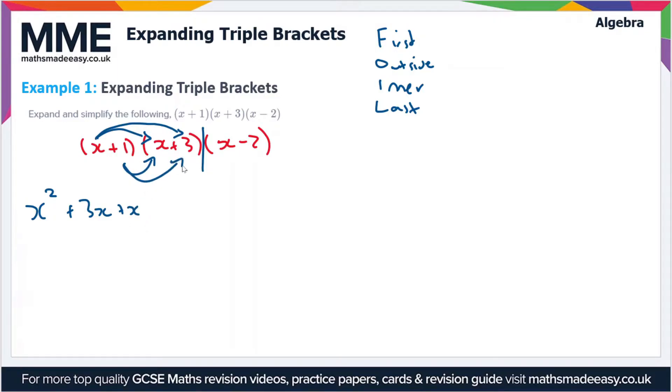And then the last terms which give us 1 times 3, which is plus 3. So if we put this in brackets, we're going to be multiplying this by (x - 2) in a minute, but for now let's just collect the like terms on what we've got here. So we've got x² + 3x + x, which gives us plus 4x plus 3. So that's our expanded double bracket and we're going to multiply this by (x - 2).